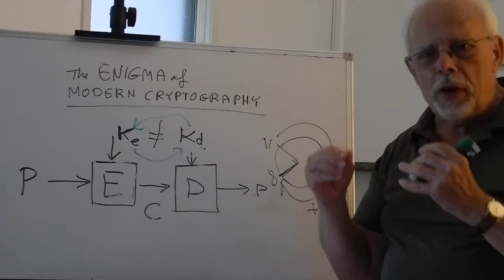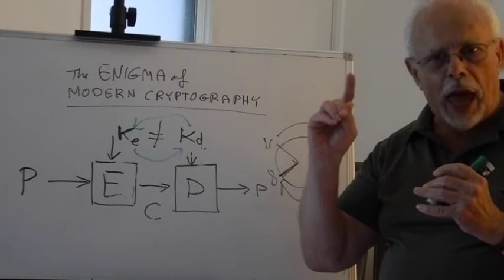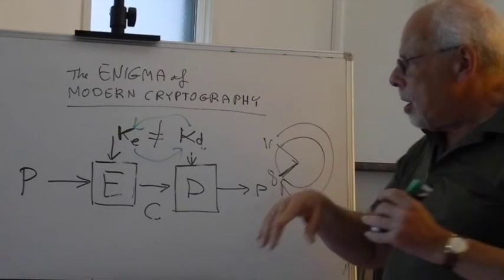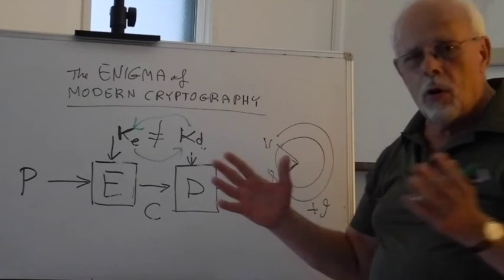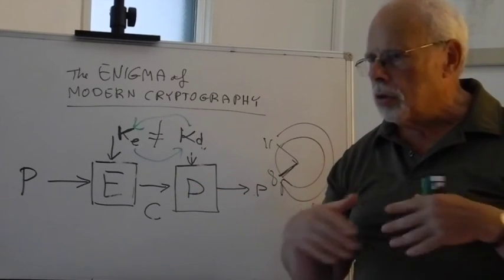And the fear of a single Alan Turing type making all the digital signatures null and void, all the certifications, all the authentication.